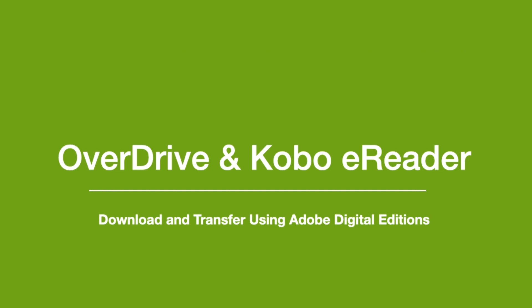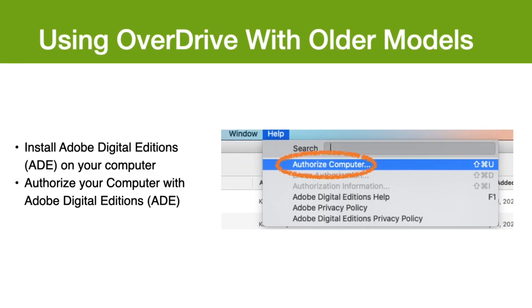Next, we can cover other models of Kobos in which books can be downloaded and transferred to your Kobo using Adobe Digital Editions. First, you'll need to install Adobe Digital Editions on your computer — see the link in the video description. Once you have downloaded Adobe Digital Editions, you will have to authorize your computer. If it doesn't prompt you when you first open Adobe Digital Editions, you can go to Help and click Authorize Computer.